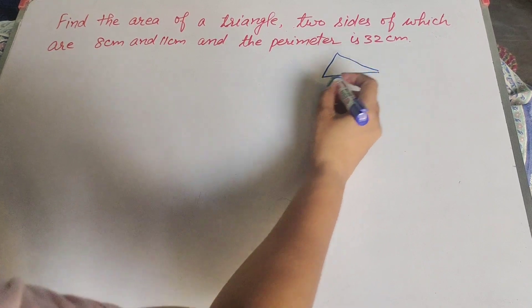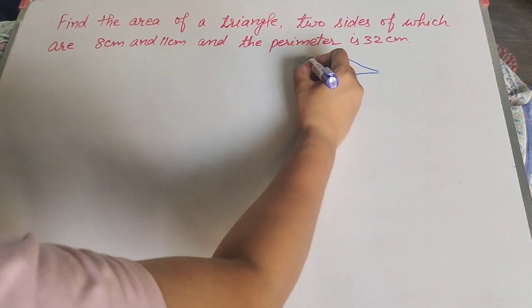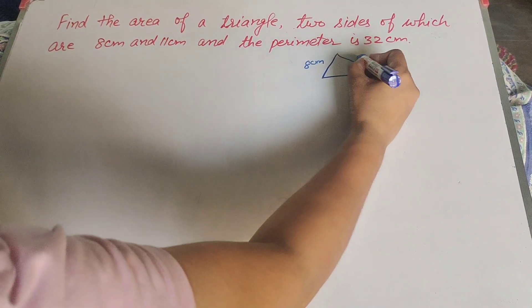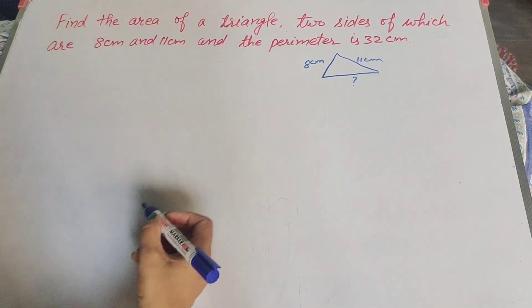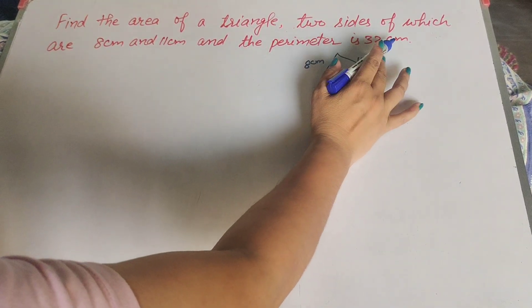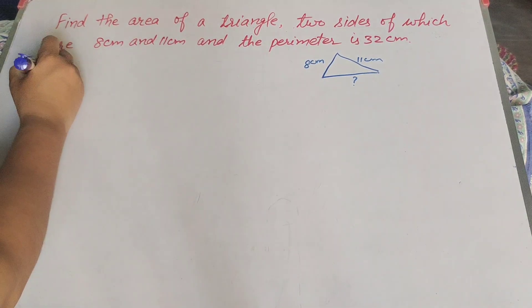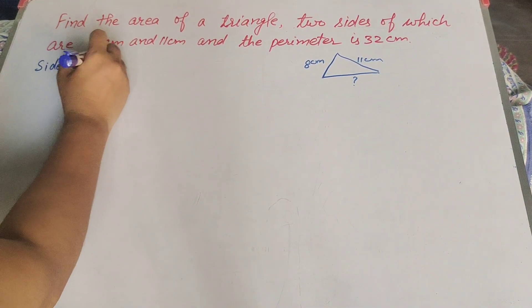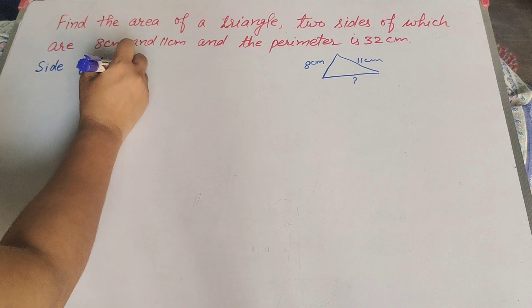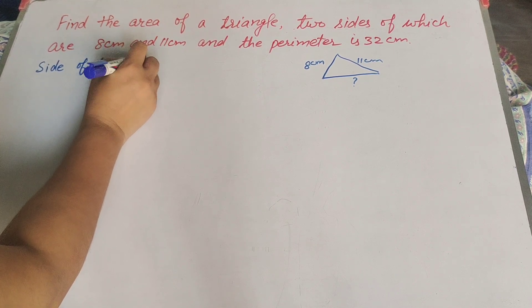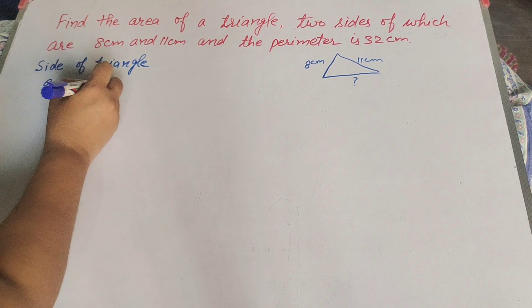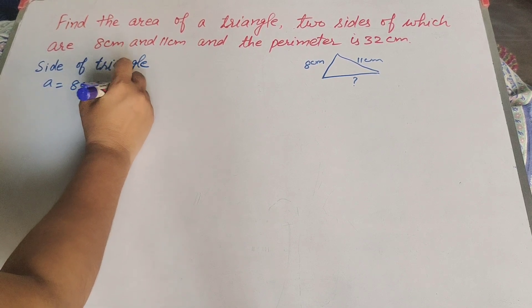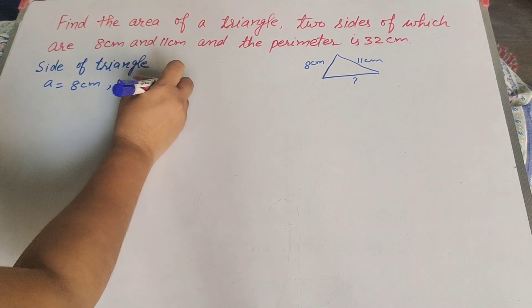A triangle is given where the length of two sides is given: one side is 8 centimeters and the other side is 11 centimeters. So side a equals 8 centimeters and side b equals 11 centimeters.